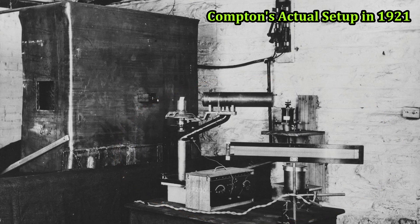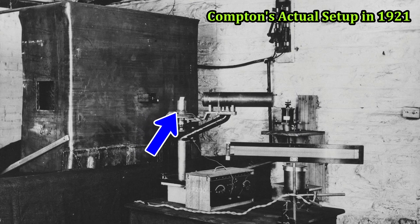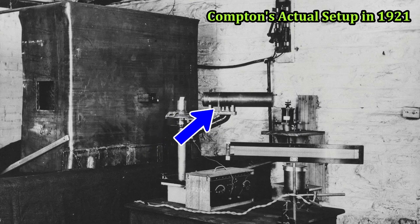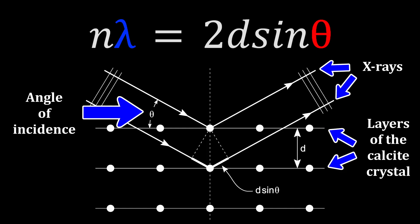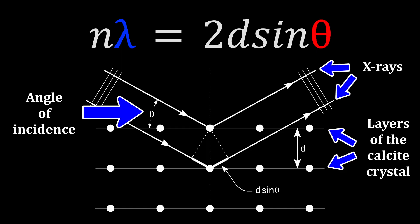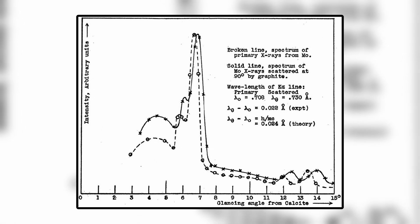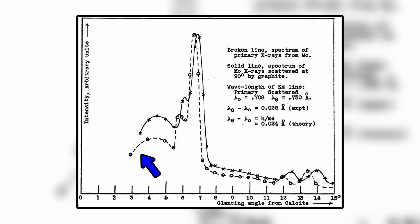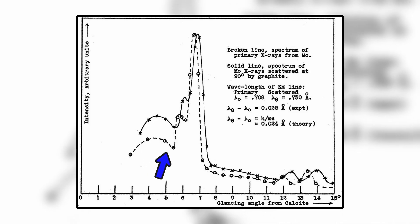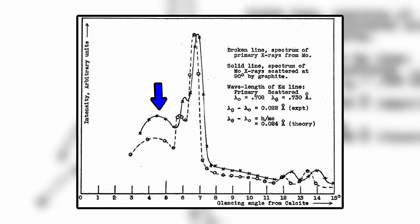A Bragg spectrometer works as follows. First, the beam diffracts through a calcite crystal. Then, the x-rays that have been scattered and now also diffracted would be collected in an ionization chamber attached to an electrometer to analyze. Using Bragg's law, he could determine the wavelengths of the x-rays based on the angle of incidence upon scattering through the calcite crystal. He then plotted intensity versus scattering angle graphs for both non-scattered x-rays shown as the dotted line and the scattered x-rays shown as the solid line.